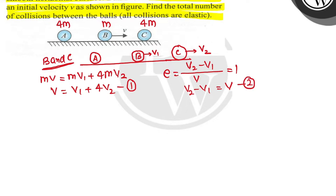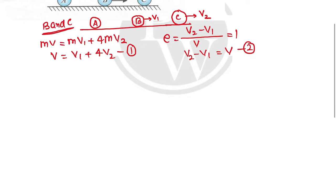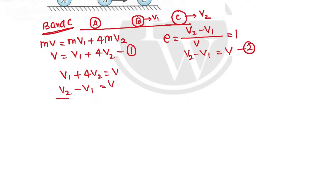We have two equations. Adding them: V1 + 4V2 = V and V2 minus V1 = V. Adding these, V1 cancels, giving 5V2 = 2V, so V2 = 2V/5.